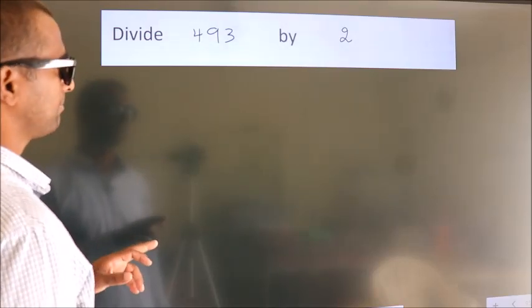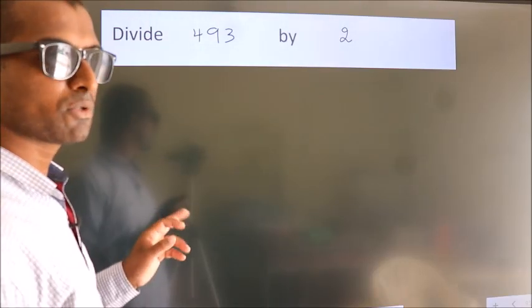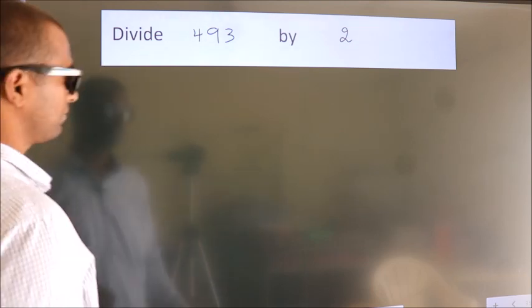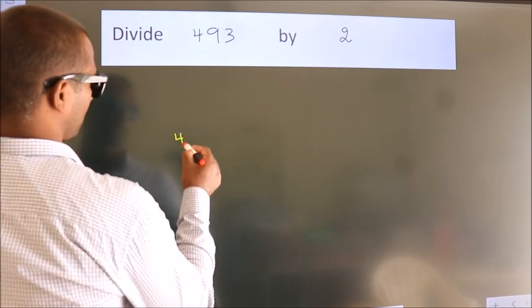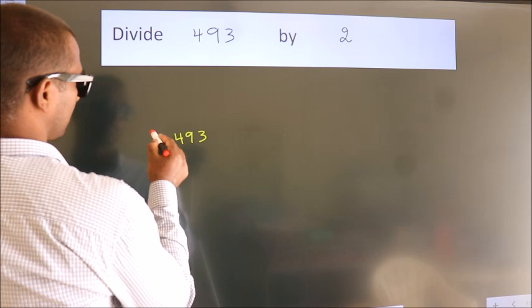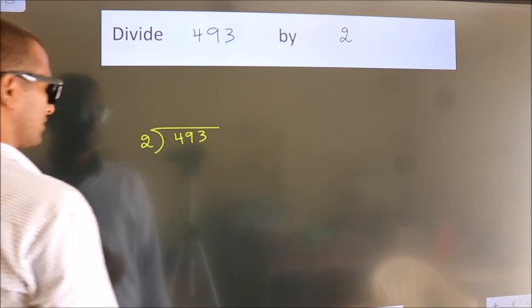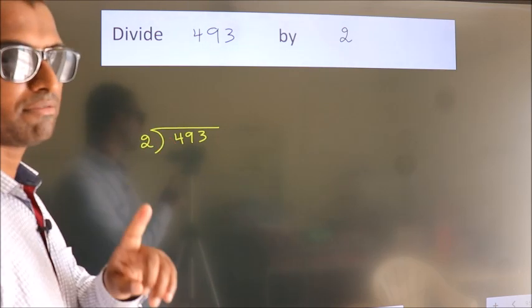Divide 493 by 2. To do this division, we should frame it in this way. 493 here, 2 here. This is your step 1.